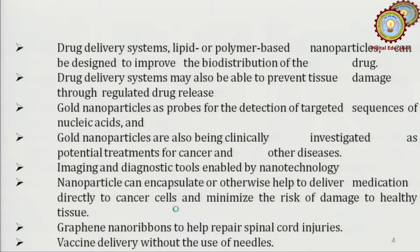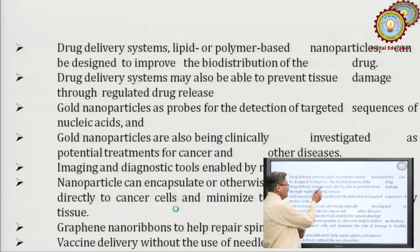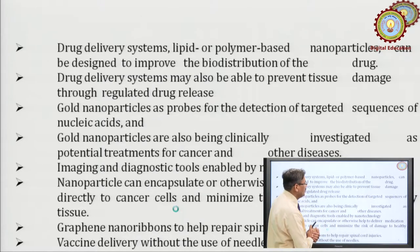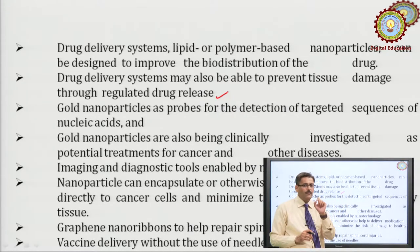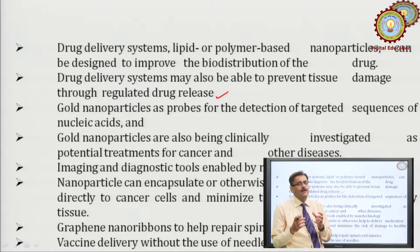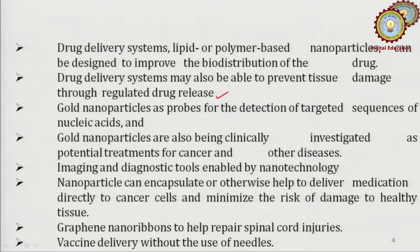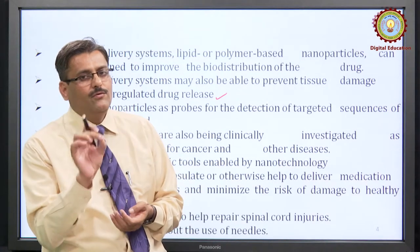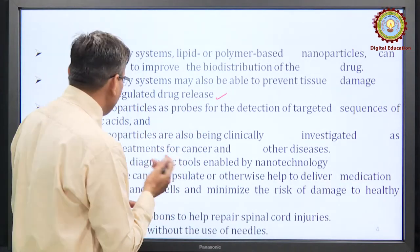Lipid or polymer-based nanoparticles can be designed to improve the biodistribution of the drug, and the delivery system may also prevent tissue damage through regulated drug release. Since nanoparticles like nanotubes or fullerenes have a cage or hollow structure, drugs can be introduced into various parts of the body. Due to their very small size, tissues will not be damaged inside the body.